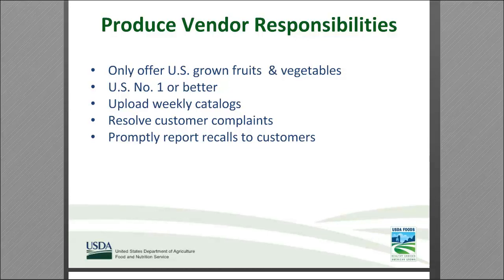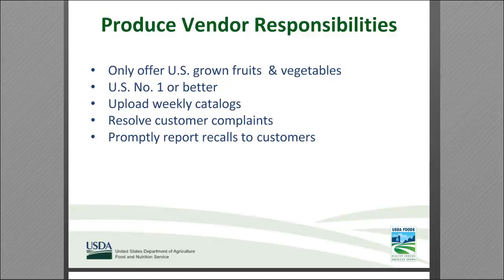The vendors' responsibilities include uploading a weekly catalog of U.S.-grown fruits and vegetables, including the state of origin and pricing information that is firm at the time of order. Vendors should communicate regularly with customers to ensure satisfaction and to address any concerns. When complaints arise, the vendor works with DLA and the ITO to ensure the complaint is resolved quickly. In the event of a recall, the vendor must promptly notify their customers.